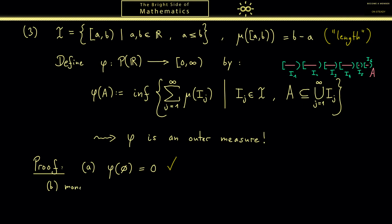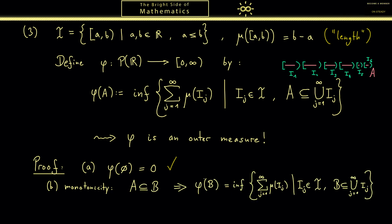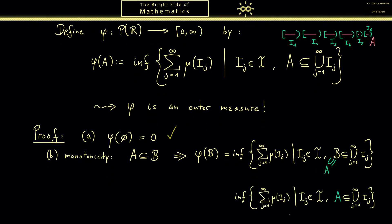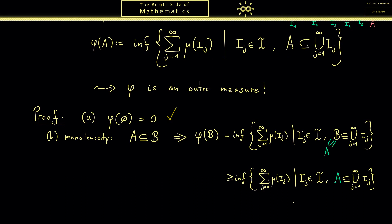Much more interesting is property B, the monotonicity. We choose two sets where one is a subset of the other. Here is the definition of phi of B: it is the infimum of the lengths where we choose intervals covering B. However we know B is a superset of A, which means these intervals also cover A. This means that if we look at all possible intervals covering A, we have more intervals here than for B. Because we only add new intervals here, the infimum can't get bigger — it only gets smaller or stays the same. And with this we have the definition of phi of A and we see the monotonicity: phi of B is indeed greater than or equal to phi of A.